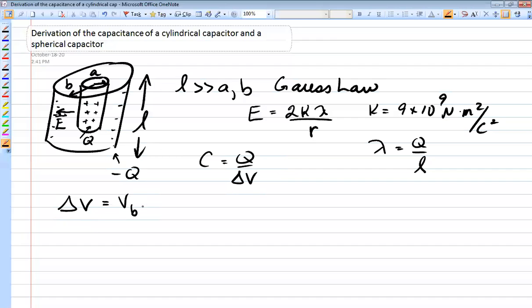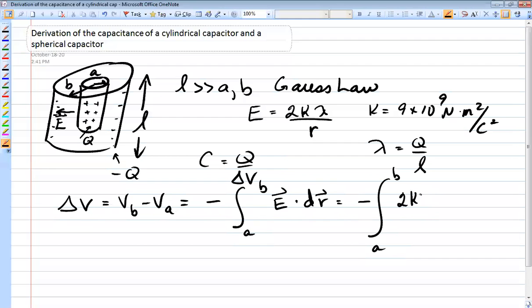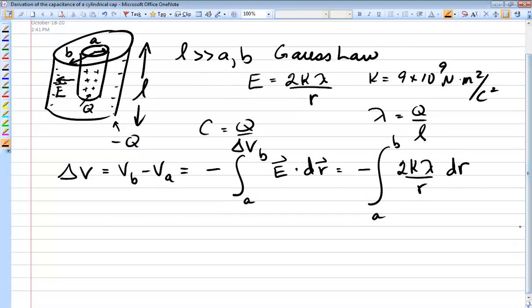So delta V will be VB minus VA which is the negative integral from A to B of E dot dr. So we simply integrate that formula that we got from Gauss's law, the 2k lambda over R dr. And this gives us negative 2k lambda ln R evaluated from A to B, which is negative 2k lambda ln B over A.